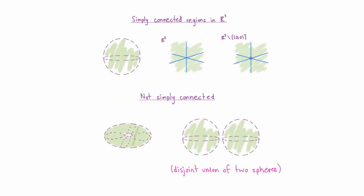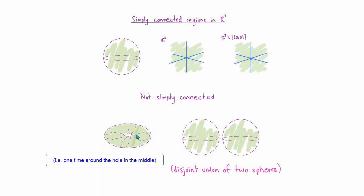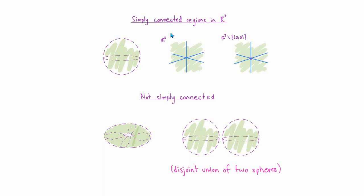These requirements rule out sets like a disjoint union of two disks (not path connected) or an annulus with a hole. In three-dimensional Euclidean space, a solid sphere and all of R3 are simply connected. Interestingly, in 3D, even if we remove the point at the origin from R3, the resulting set is still simply connected, because any closed loop can be shrunk to a point while avoiding the origin — unlike in two dimensions.